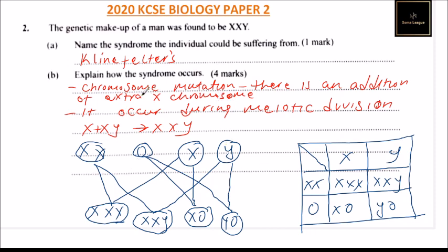The correct answer should start by saying: as a result of chromosome mutation and also it occurs during meiotic division. That's how you answer that question and you'll be able to get five marks.